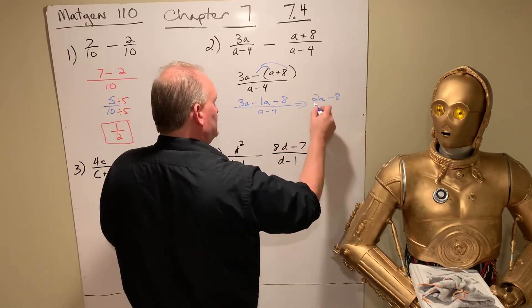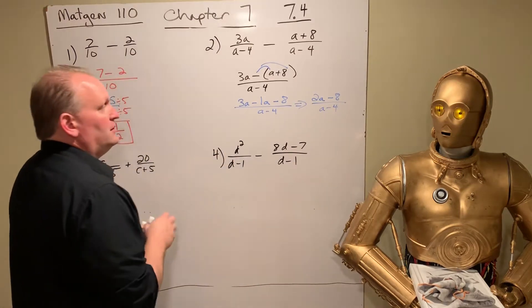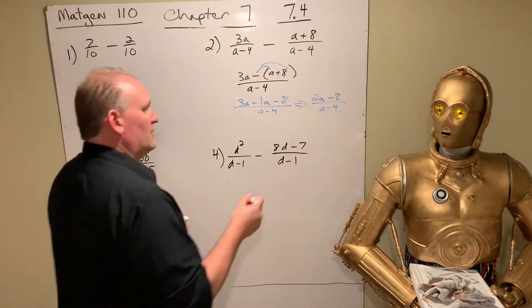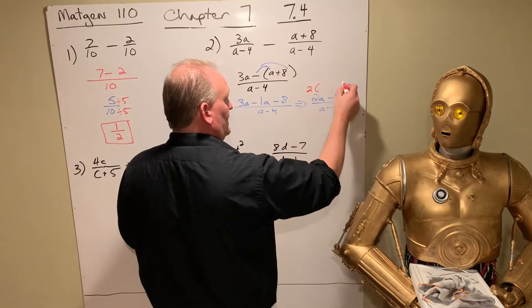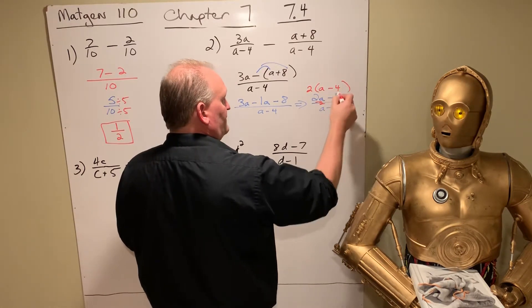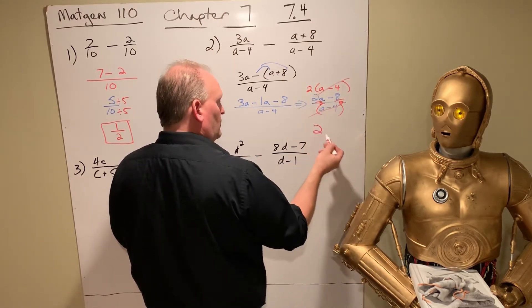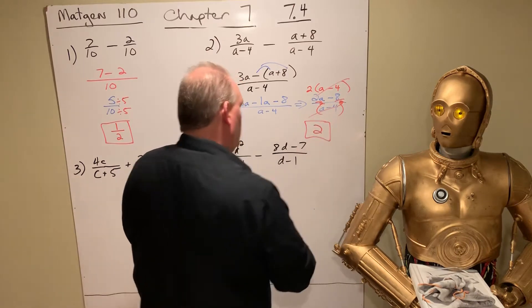And then we can put those together. So what does that give you? 2a minus 8 over a minus 4. Now, we can factor out a 2 on the top. Divide that by 2, divide that by 2, we get a minus 4. And check it out. A minus 4s cancel. We just have 2 over 1, or just plain old 2.